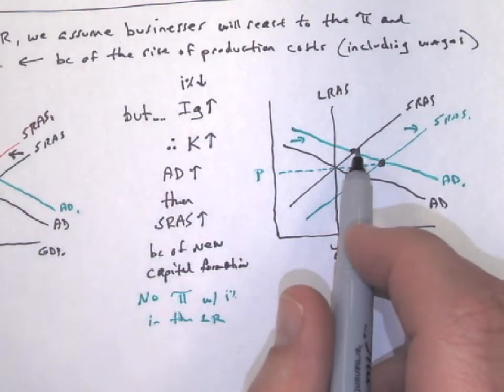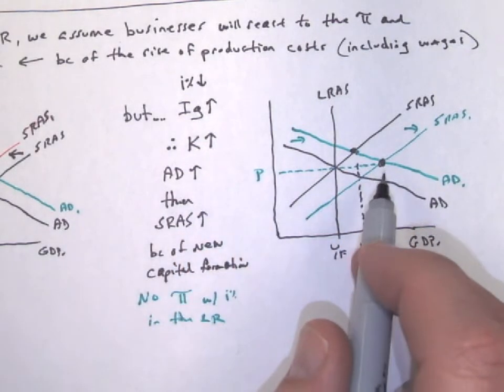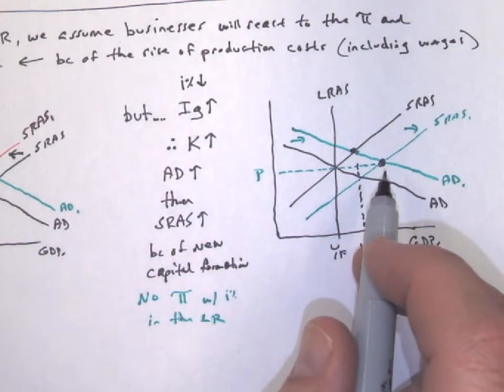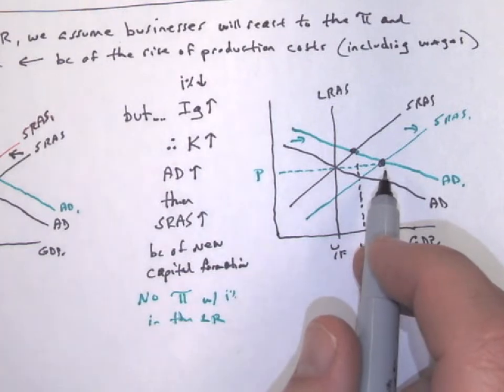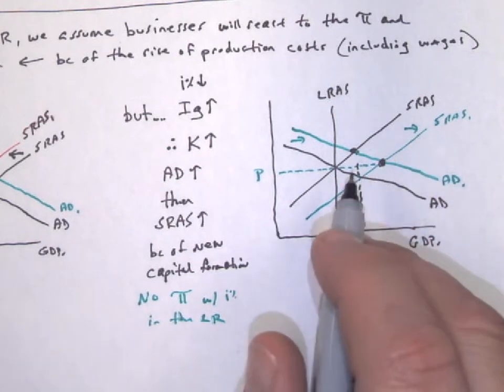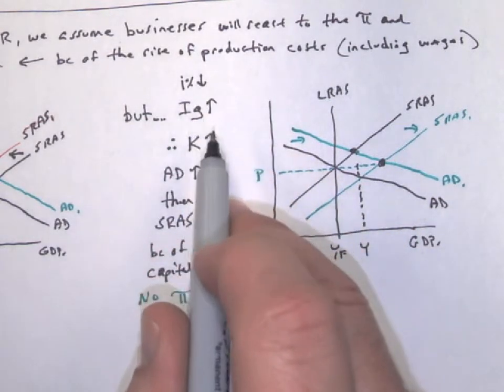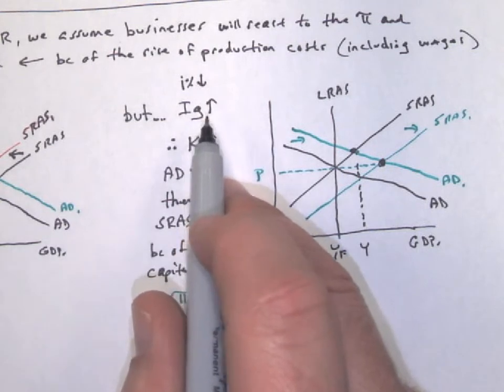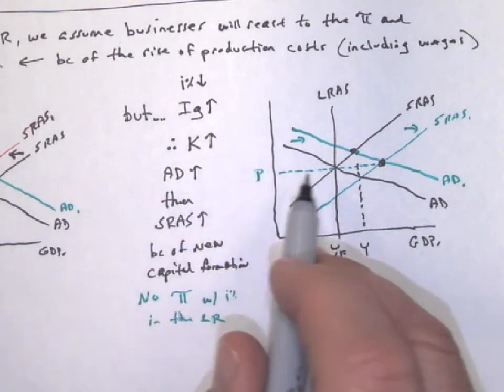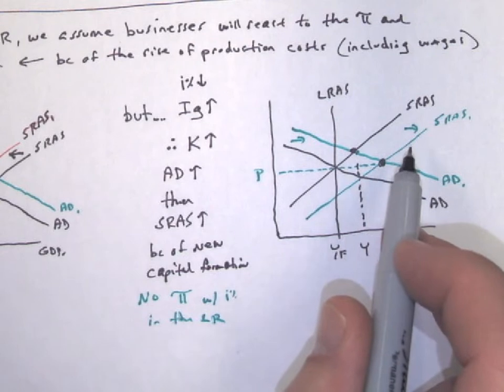Now, what's going to happen, though, is these businesses are going to see all this demand and the interest-sensitive consumption that increased. Demand is also going to have a reaction from the supply side. They're going to go, oh, well, look at all this demand. Let's borrow some money at this low interest rate. Let's invest in our businesses, and that way we can make more stuff. So then short run supply is going to shift to the right.